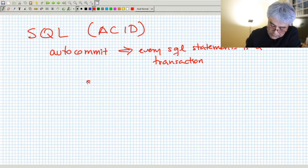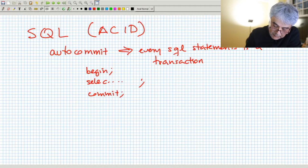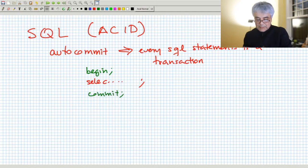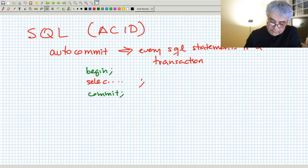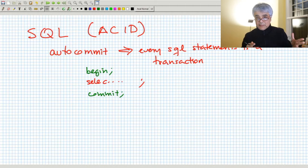In other words, if you do select etc. semicolon, this essentially gets wrapped by a begin transaction and a commit. So these two happen implicitly, the DBMS adds it, so every statement essentially has begin and commit. The begin is also implicit, we don't have to explicitly say begin. And if we have autocommit there's no way to roll back a statement. So you run the statement, let's say that you delete all the tuples from a table, it's deleted, there's no way to undo that change.